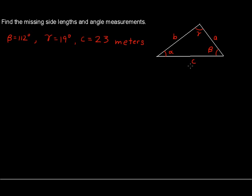I like to write this down right on the triangle so that I don't get confused later on. So the side length of C is 23 meters, gamma is 19 degrees. That's a Greek letter, gamma. The angle beta, another Greek letter, that angle is 112 degrees.